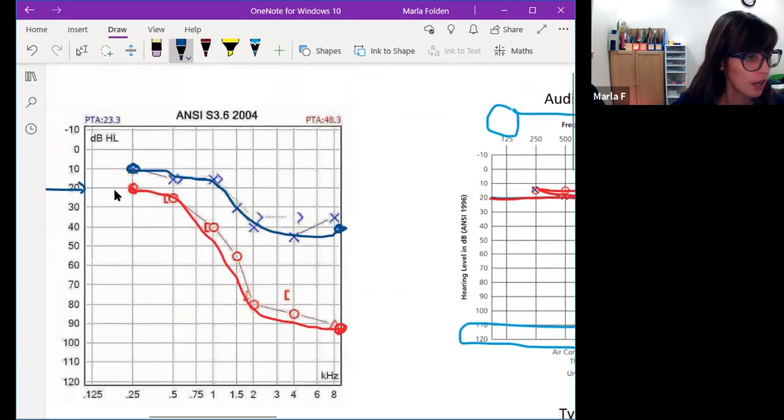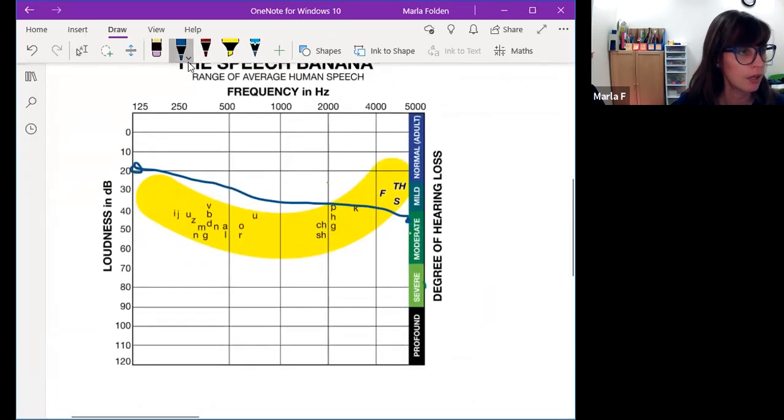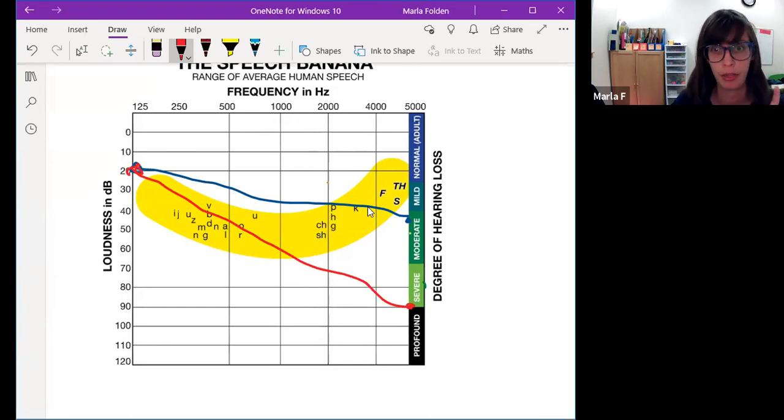They're going to start here at normal hearing and it's going to go way down there to 90. Let's see what that looks like for their right ear. Remember, right red. Starting off pretty normal, and cruising way down to about 90. What is that going to mean for that person in terms of the speech sounds they can hear? Everything above the line, they can't hear it. So that means in their right ear, they can't hear shh, chh, gh, ph, hh, ch. That's a lot of sounds. That means if you're trying to give this person verbal instructions, they're only hearing maybe half the word. This could be why some of our students are misbehaving because they can't actually hear.